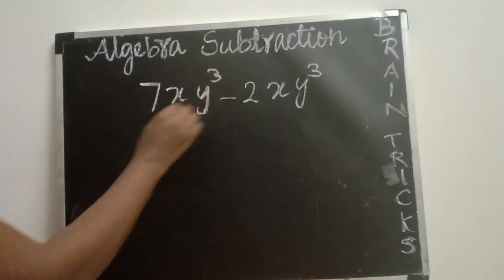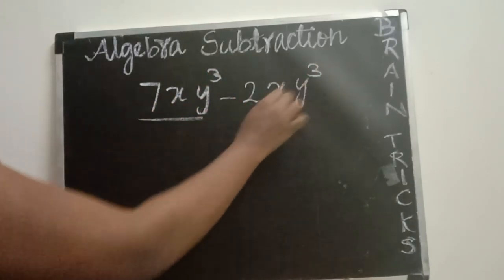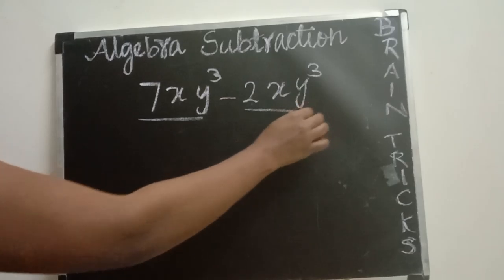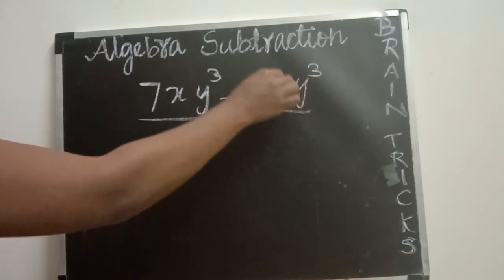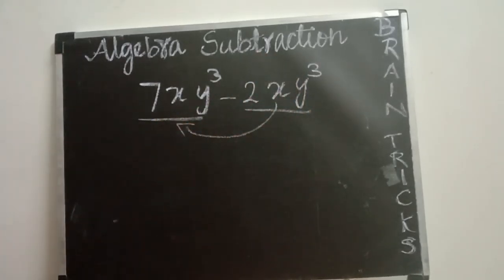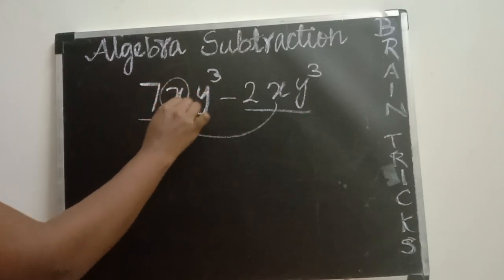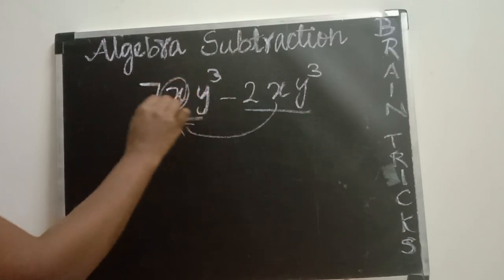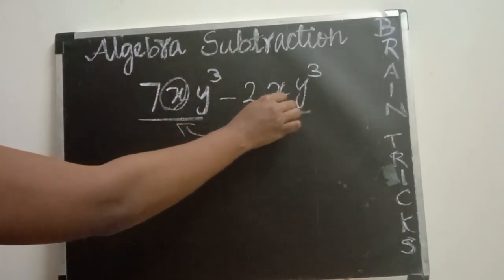Next example: 7xy power 3 — this is one term — and 2xy power 3 — this is one term. You are going to do subtraction of this term from this term. The condition in algebra addition and subtraction is: you have to check the variables. Here 7 has variable x, and here also we have variable x.